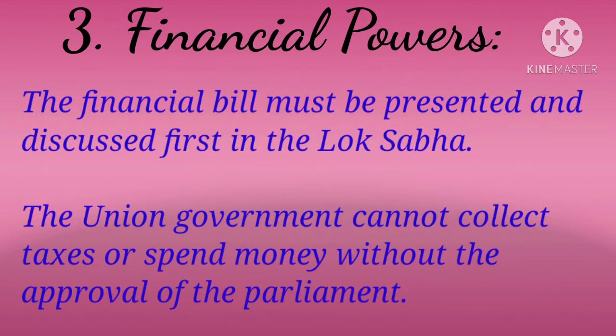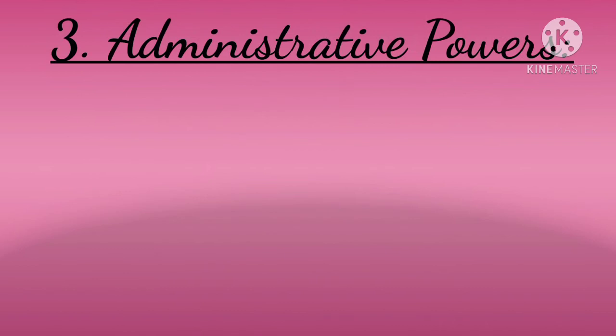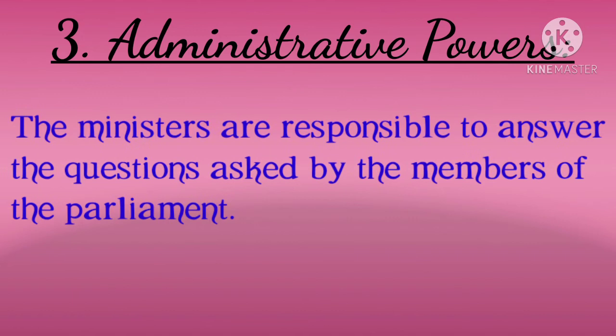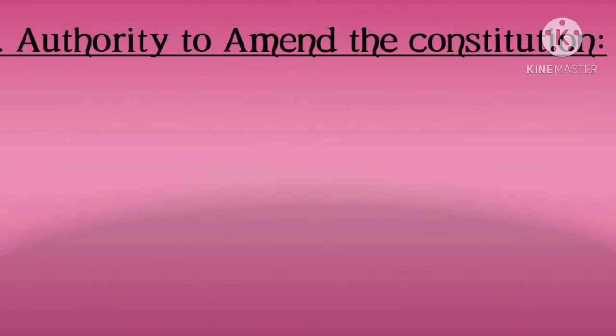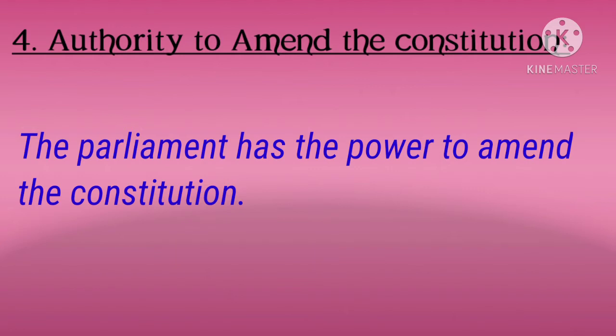Let us now move on to Financial Powers. The Financial Bill must be presented and discussed first in the Lok Sabha. The Union Government cannot collect taxes or spend money without the approval of the Parliament. Next are the Administrative Powers — the Ministers are responsible to answer the questions asked by the Members of the Parliament. The Parliament also has the authority to amend the Constitution.